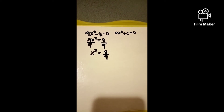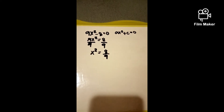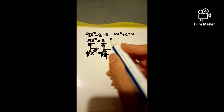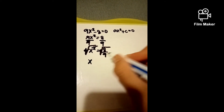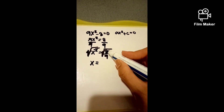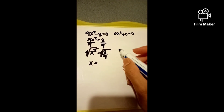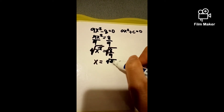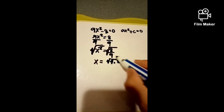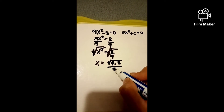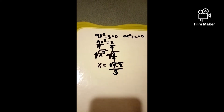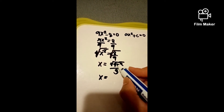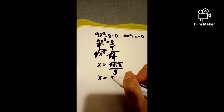Next, apply the square root property. Remember to include the positive and negative sign and simplify. Apply the square root to both sides — the square root sign eliminates the squared on x. For 8, since it's not a perfect square, we find its factors: 8 equals 4 times 2. The square root of 9 is 3, because 3 times 3 equals 9. The square root of 4 is 2.